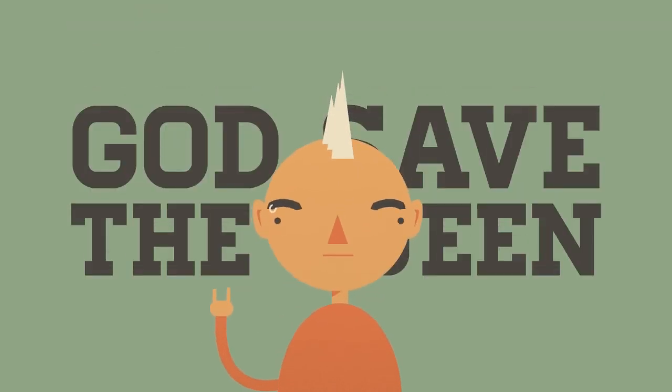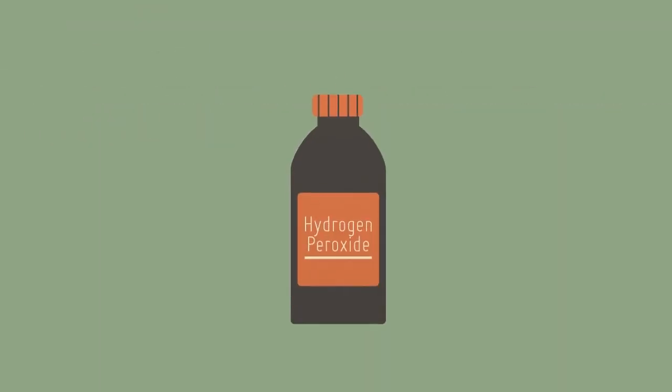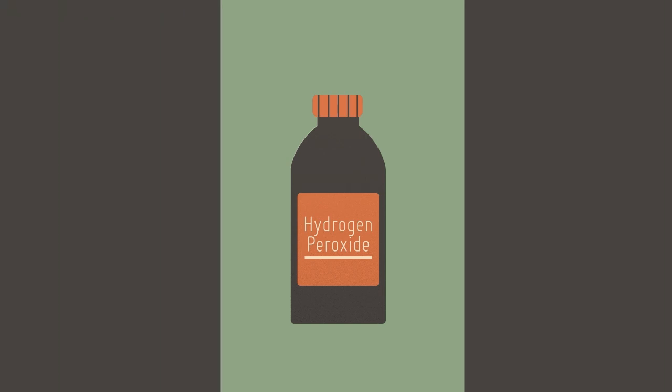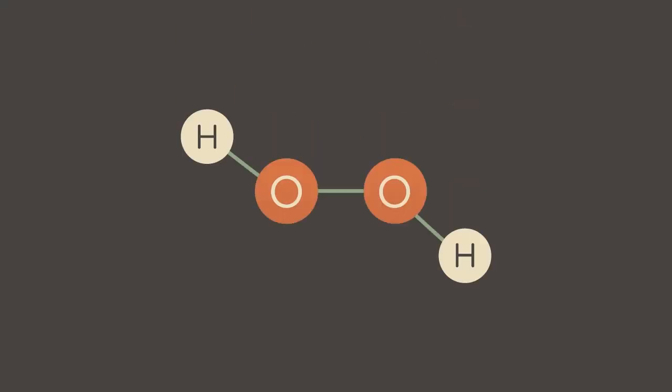Whatever the real-life uses, hydrogen peroxide is always stored in a dark plastic container, away from sunlight. This is because in the presence of warm conditions and UV light, hydrogen peroxide can decompose into water and oxygen, because the oxygen-oxygen bond in the molecule is unstable.